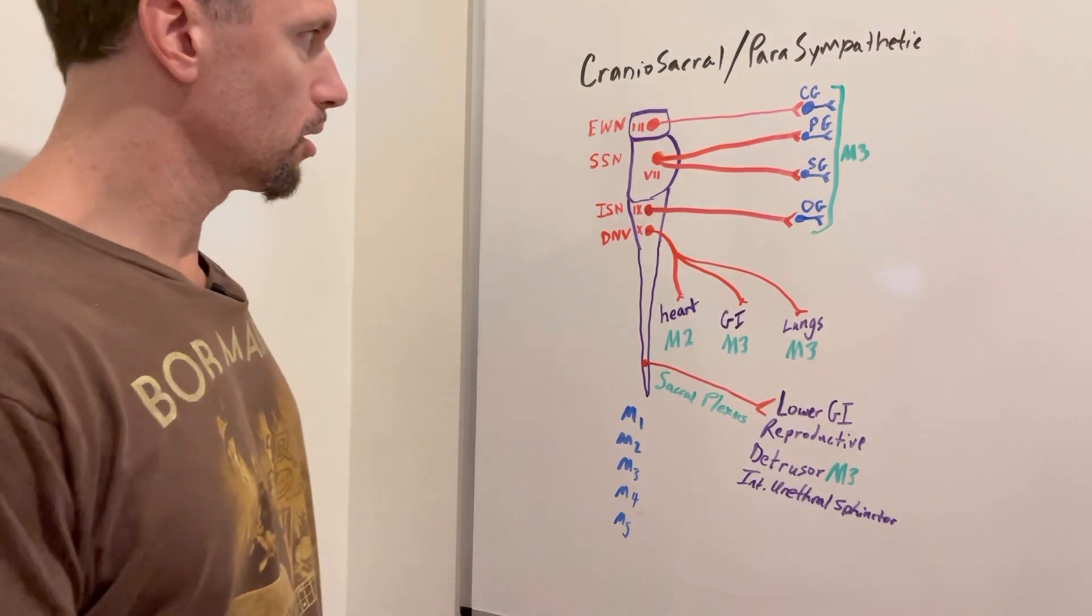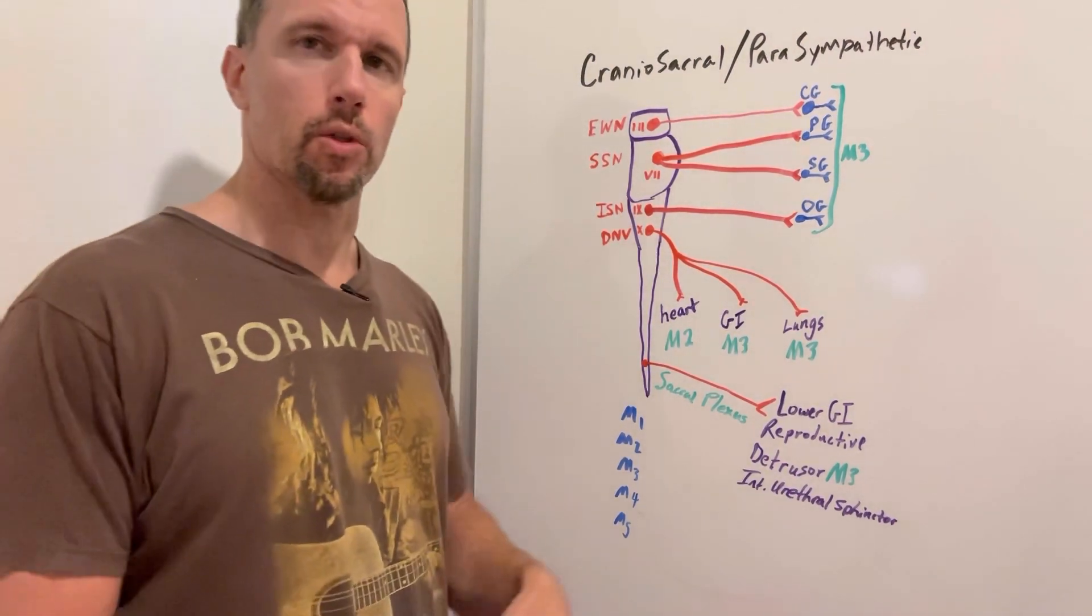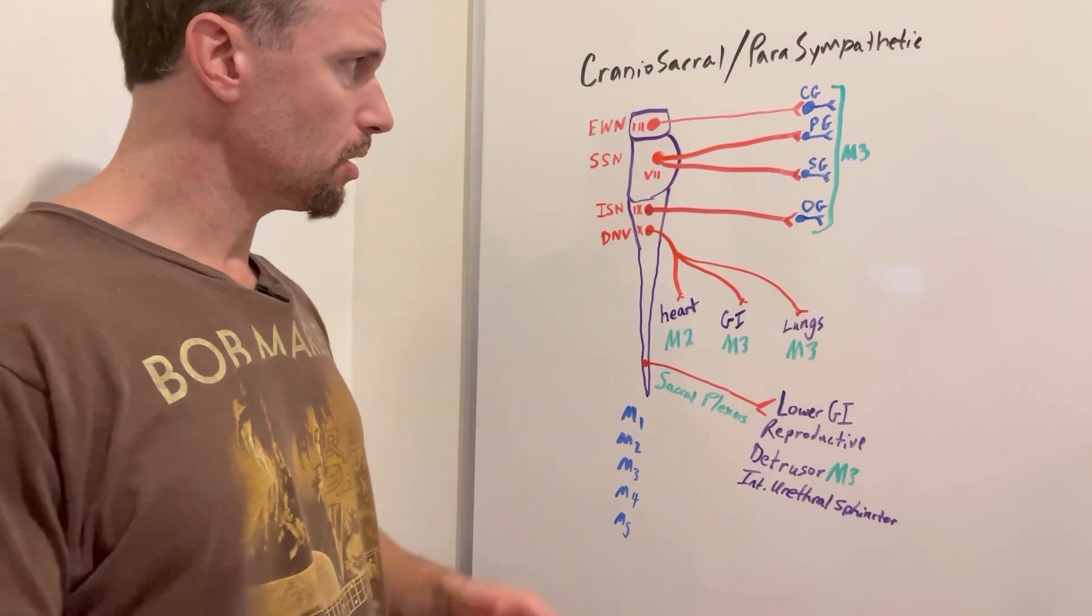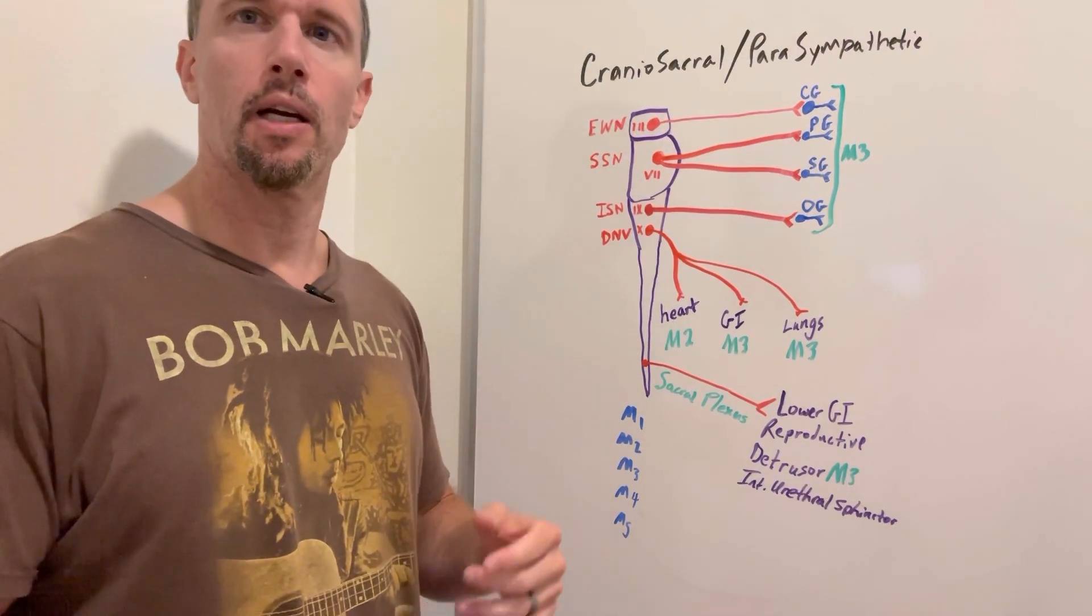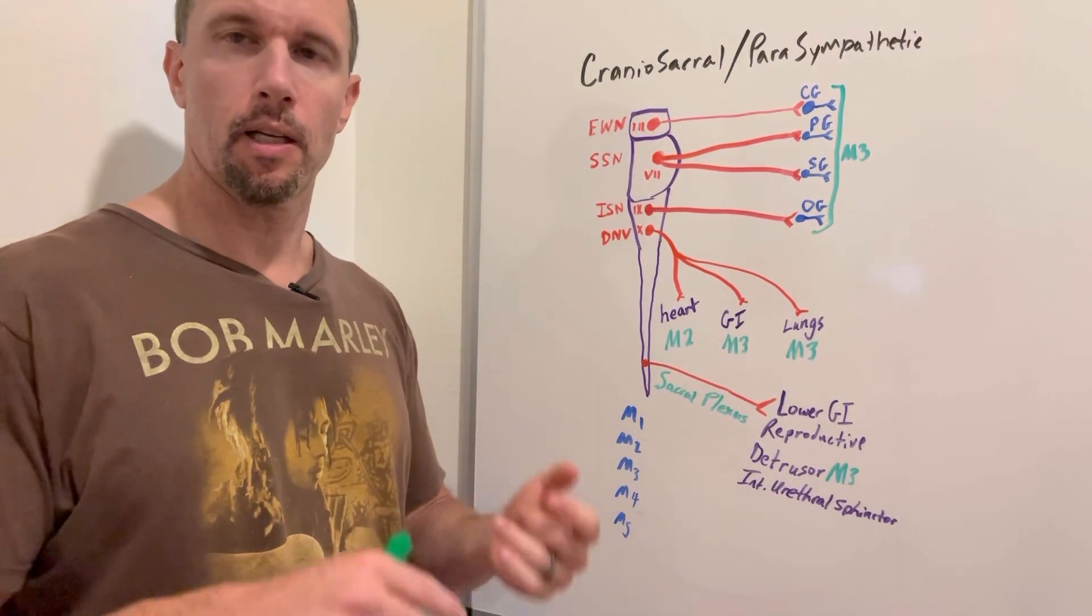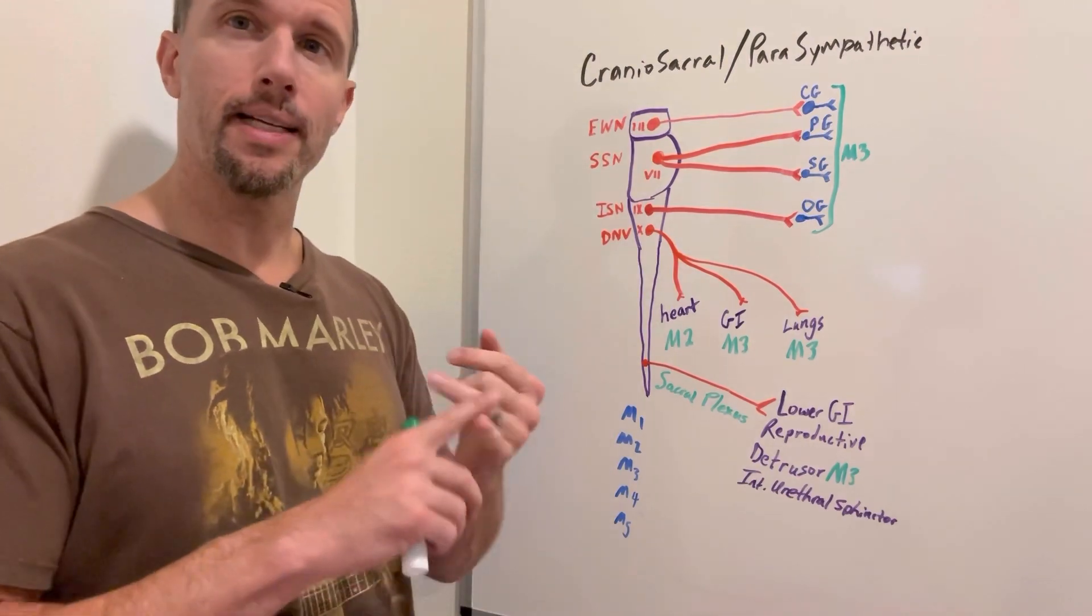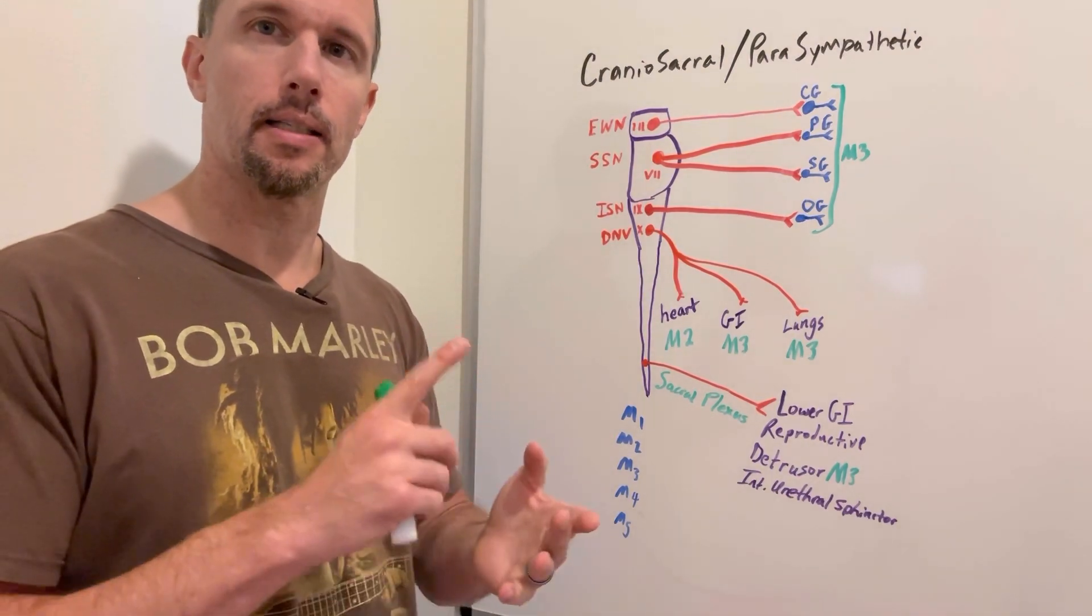Let's look at the brainstem, starting from the top down. There are four different cranial nerves that have parasympathetic innervation: cranial nerve number 3, 7, 9, and 10.